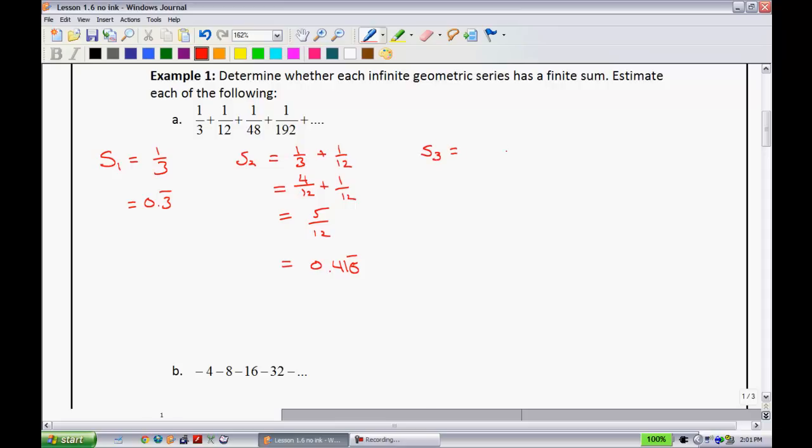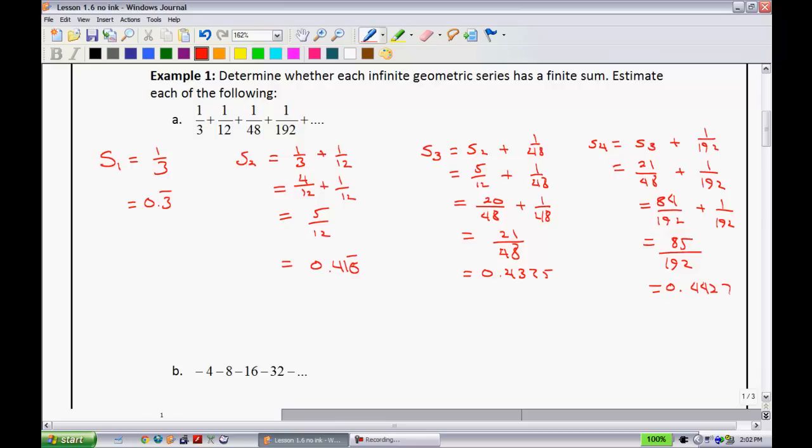If I go S3, I'll have the sum of the first two terms plus 1/48. The sum of the first two terms is 5/12 plus 1/48. I have to get a common denominator again, that makes it 48. I'm going to add these together and you get 21/48. When you put that into your calculator, you're going to get 0.4375. So they're increasing ever so slightly. If we put in the fourth one, we have the sum of the first three terms plus 1/192. Not a whole lot that we're adding anymore. We have 21/48 plus 1/192. Getting our common denominator, it'll have to be 192. Multiplying 48 by 4 will give you 84. Adding these, we have 85/192. You're going to see this one's not going to change quite as much. We're going to have 0.4427.